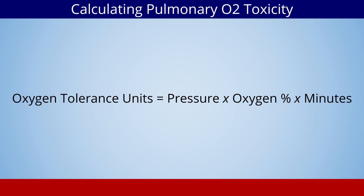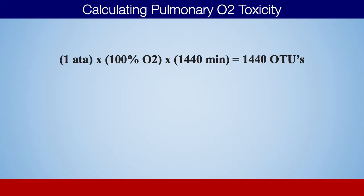The idea here is that oxygen toxicity occurs when a patient gets 1,440 units. That number comes from being at one atmosphere breathing 100% oxygen for an entire day — 24 hours is 1,440 minutes. So one atmosphere times 100% oxygen times 1,440 minutes equals 1,440 units, or oxygen tolerance units, as they're called in pulmonary oxygen toxicity.